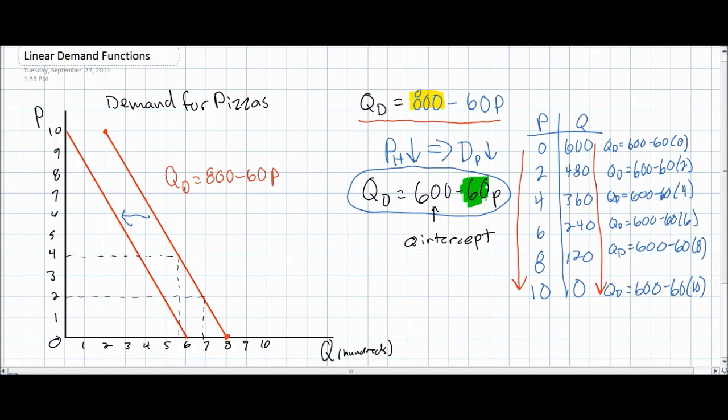The slope is still minus 60, indicating for every $1 increase in the price of pizzas, the quantity demanded falls by 60 units. Of course, on our demand schedule here, the price is increasing in $2 increments, which means that for every $2 increase in price, the quantity demanded falls by 120 units.